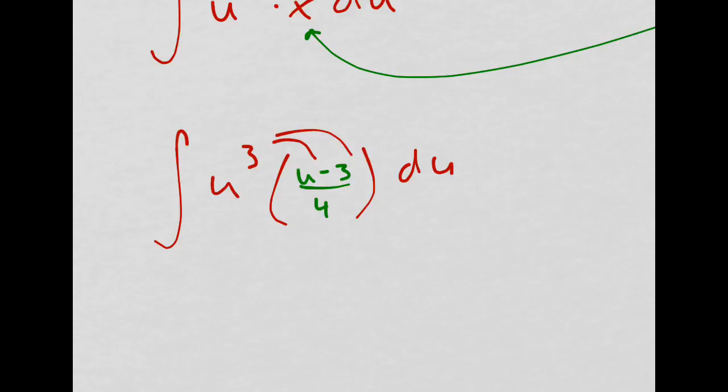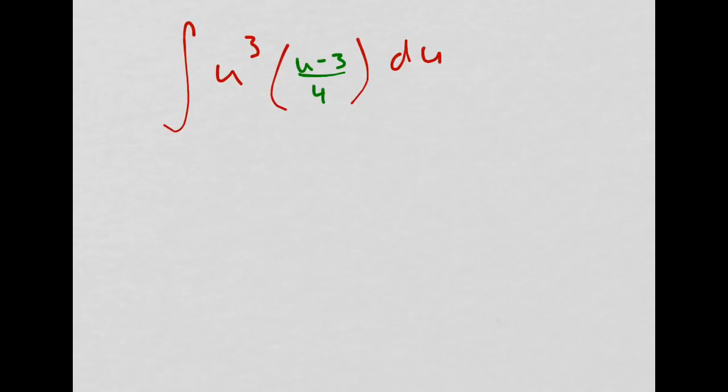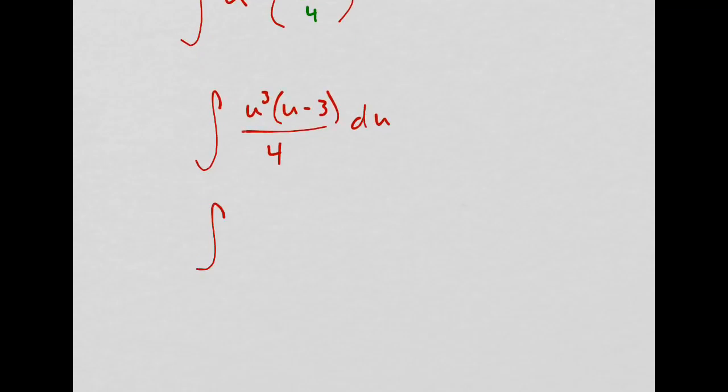Well, I'm going to distribute, right? This is like over 1. So I can just put the whole thing under, well, over 4. And then I get u cubed times u minus 3 du.